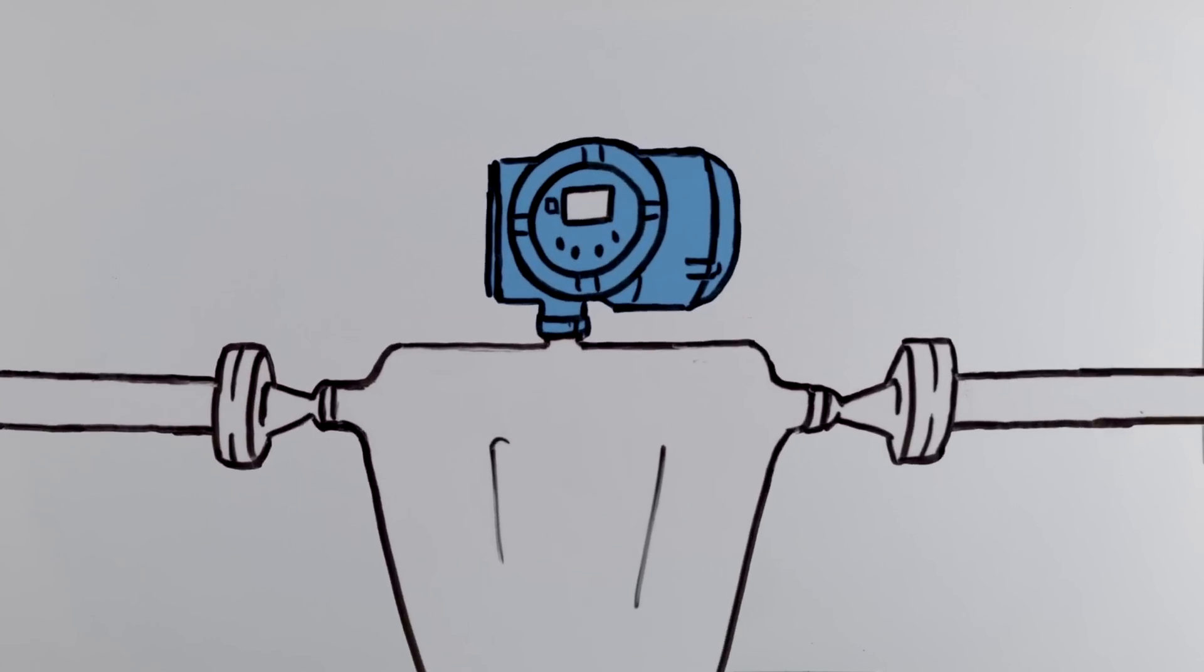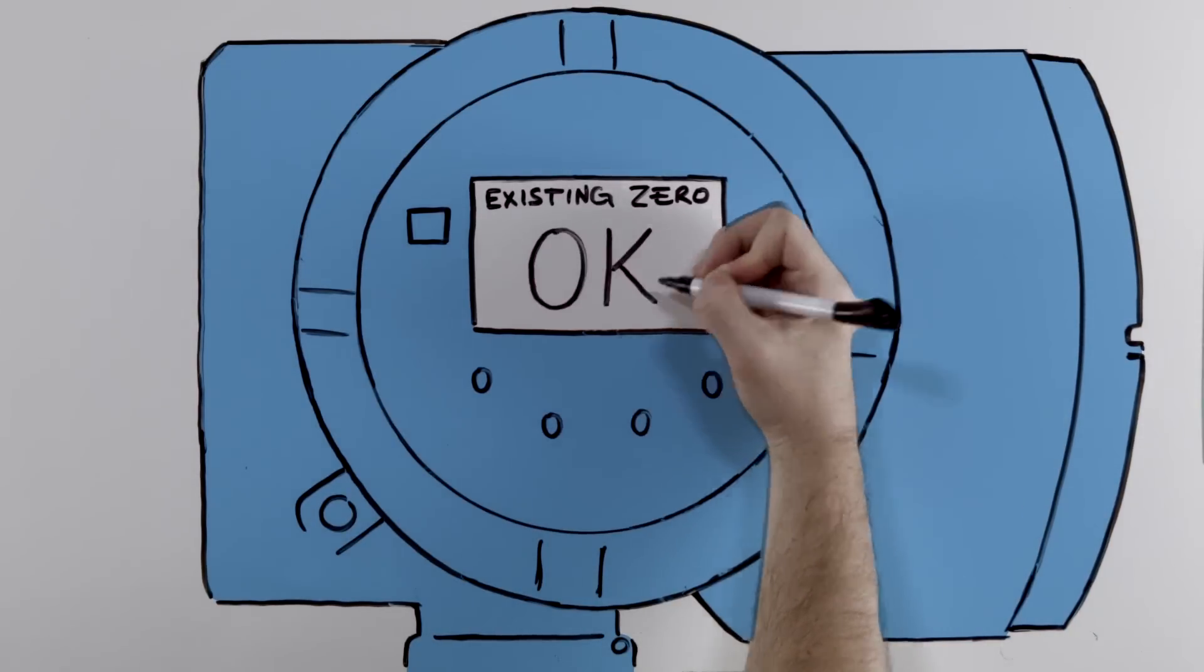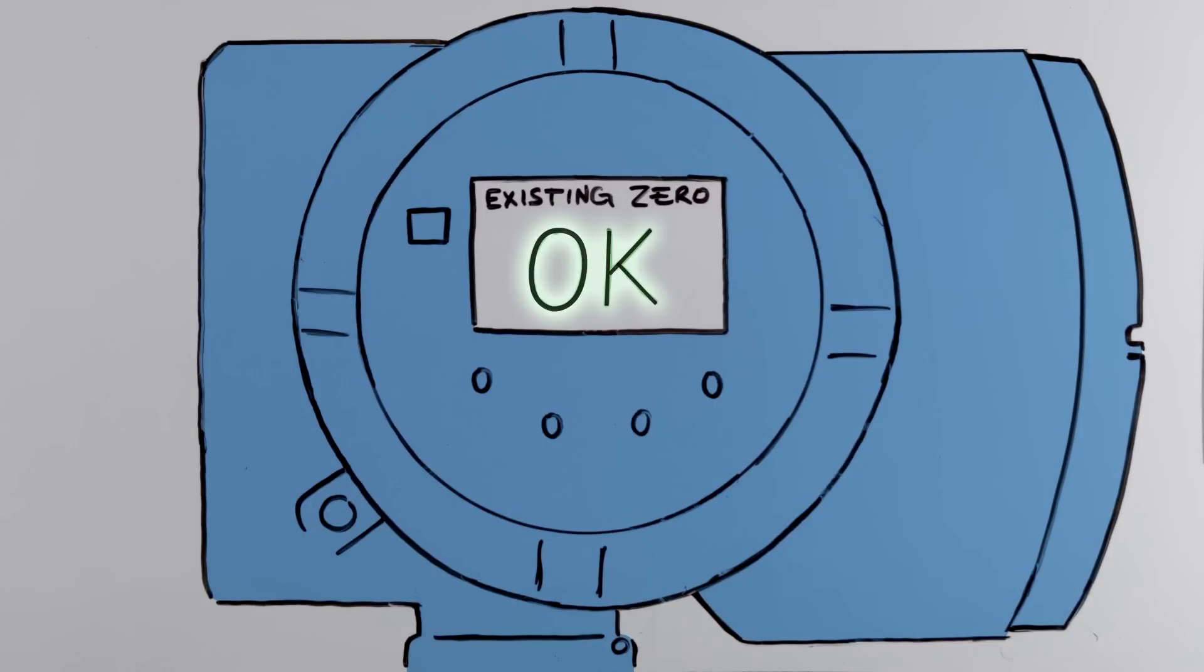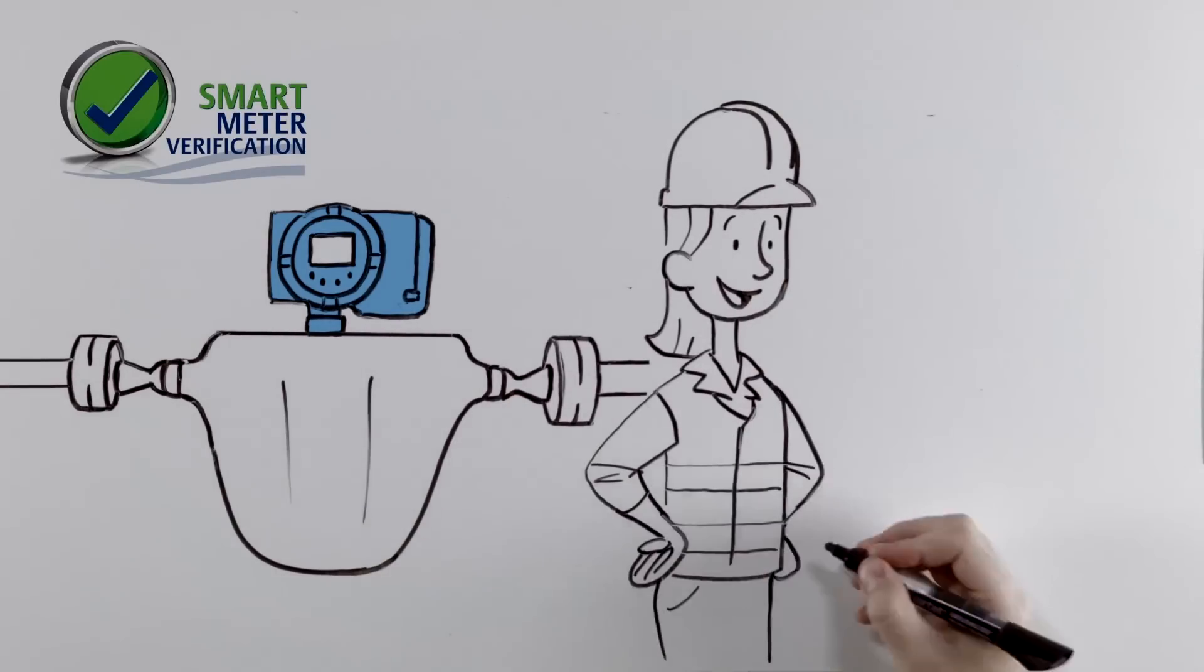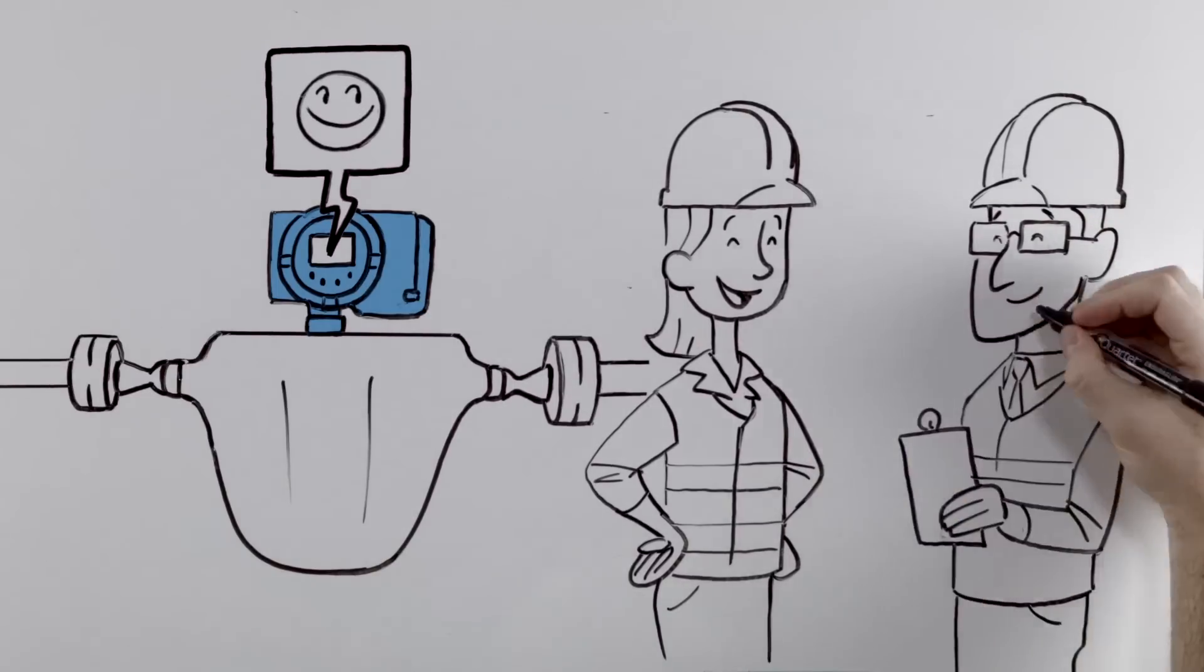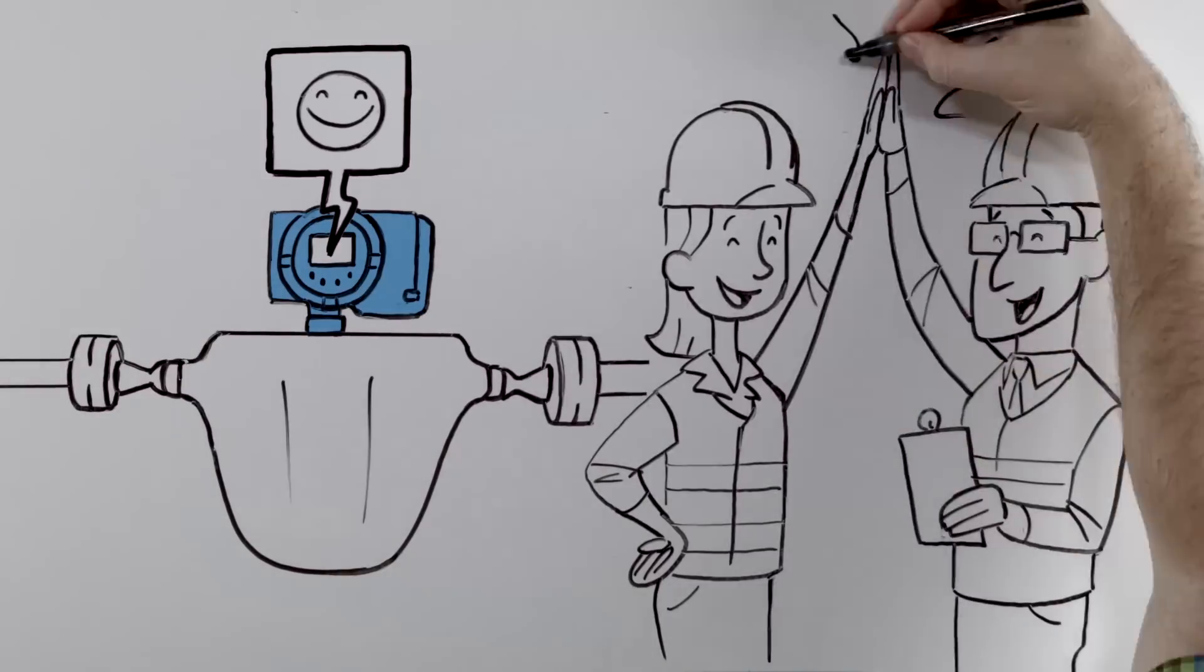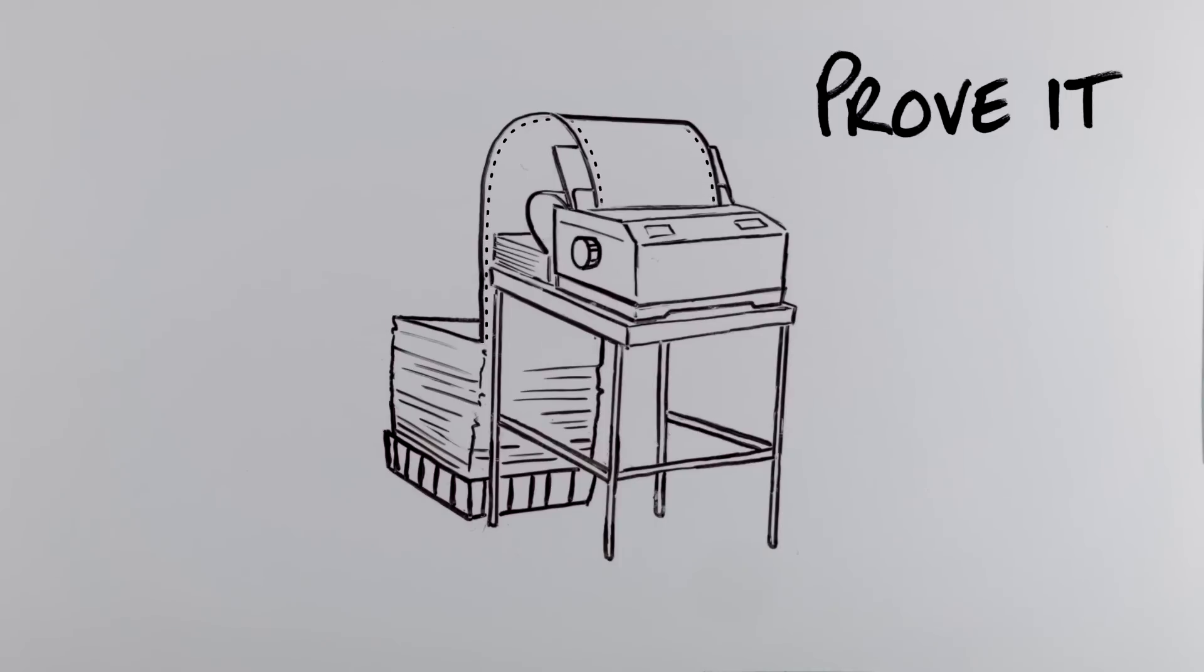For Tina, knowing when not to zero is the best result she can get to prove to the process engineers that the meter is doing its job. Better yet, running this process along with smart meter verification, another Micromotion diagnostic tool that checks the meter health, guarantees Tina her devices are always running at optimum performance. And both tools provide the paper trail Tina needs to prove it again and again.